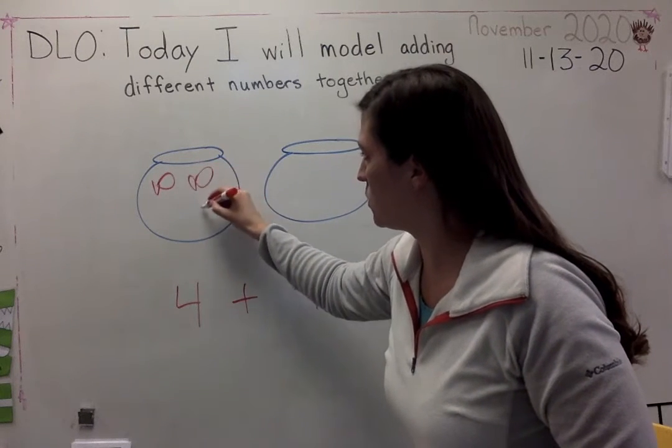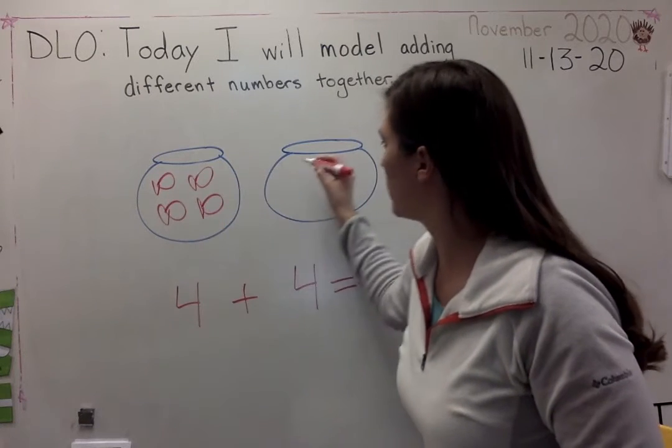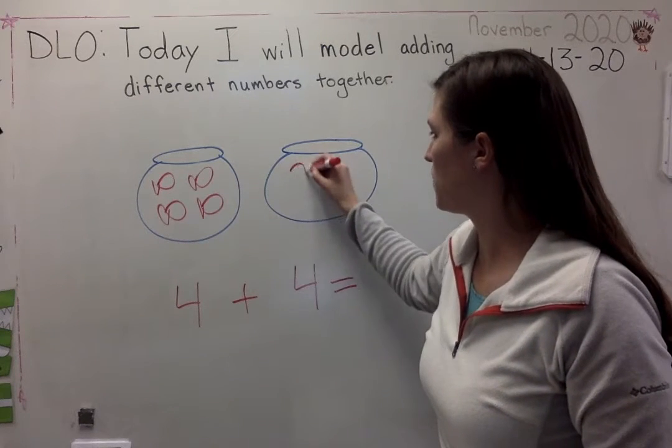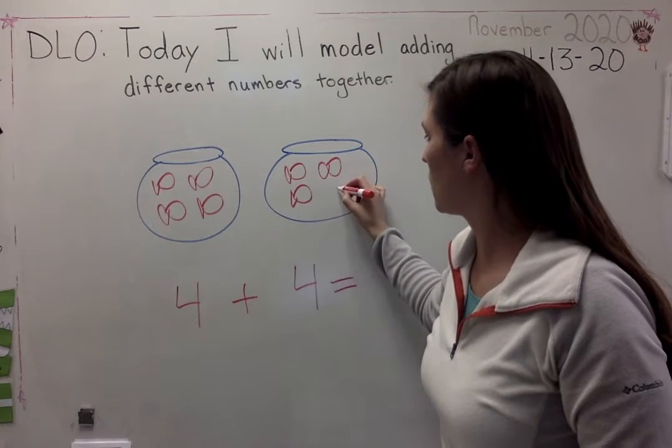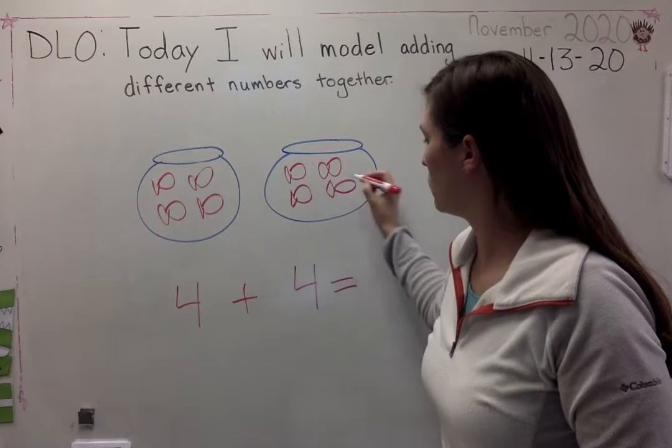So four fish. One, two, three, four, and then four more. One, two, three, four.